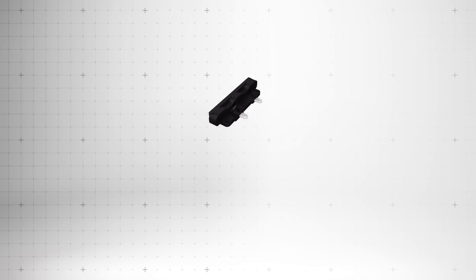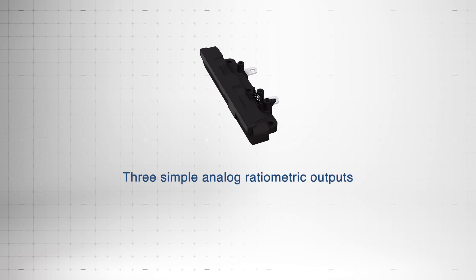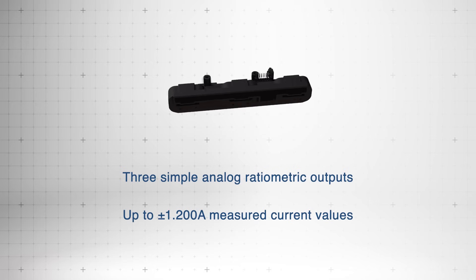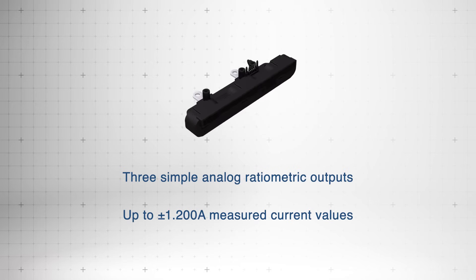The sensor provides three ratiometric analog outputs proportional to the current, supporting high-capacity measurement up to plus or minus 1,200 amps with reliable accuracy.